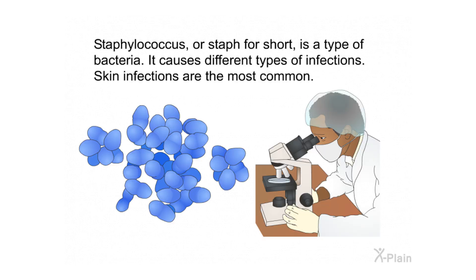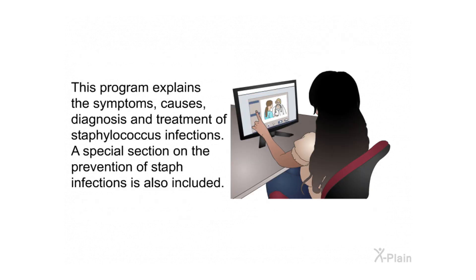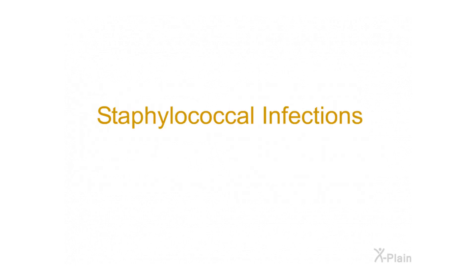Staphylococcal infections — introduction. Staphylococcus, or staph for short, is a type of bacteria. It causes different types of infections; skin infections are the most common. Staph bacteria can survive for a long time in the body and on the skin, and can also live on surfaces or objects touched by an infected person. The best way to prevent staph is to keep hands and wounds clean.